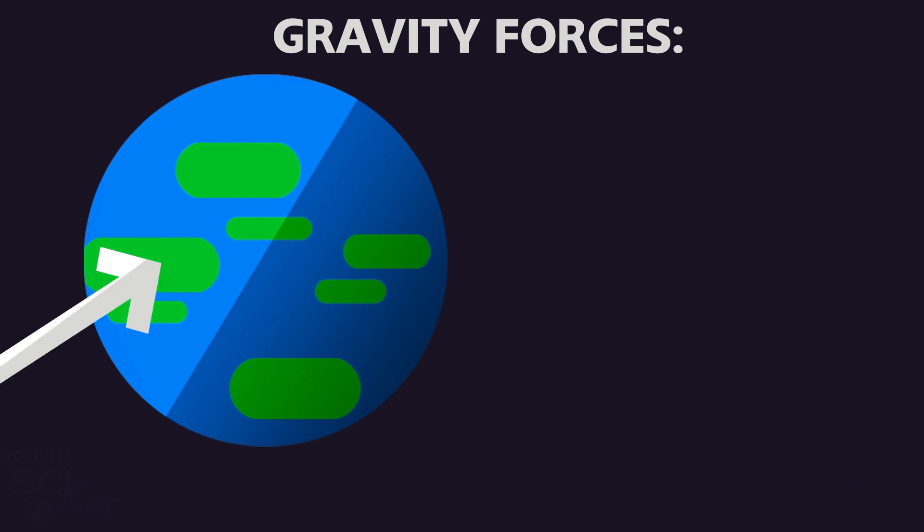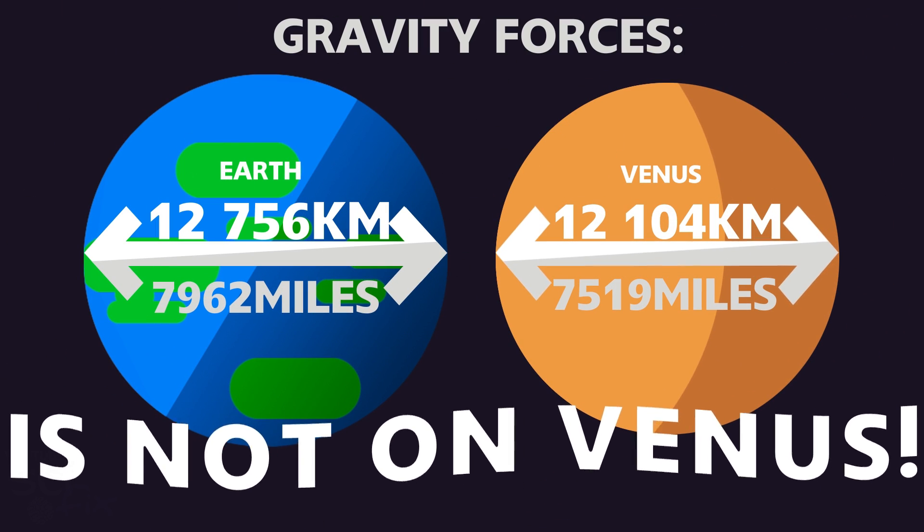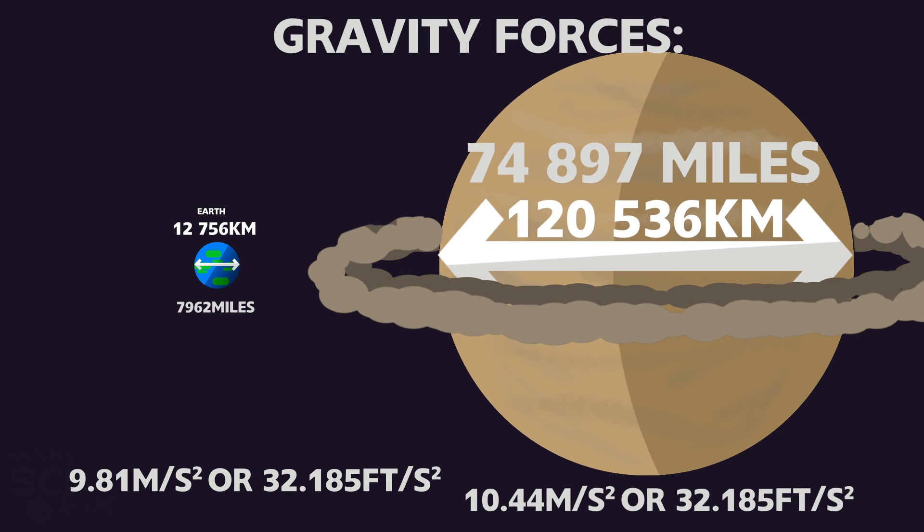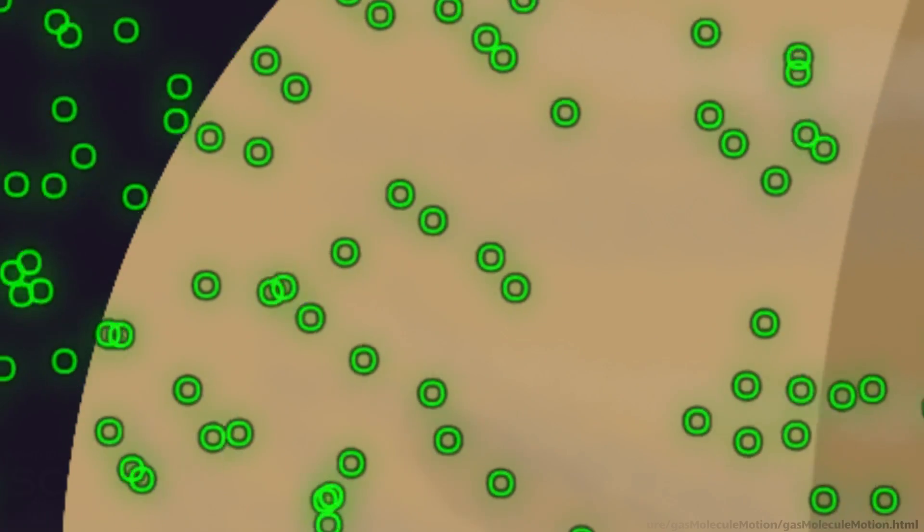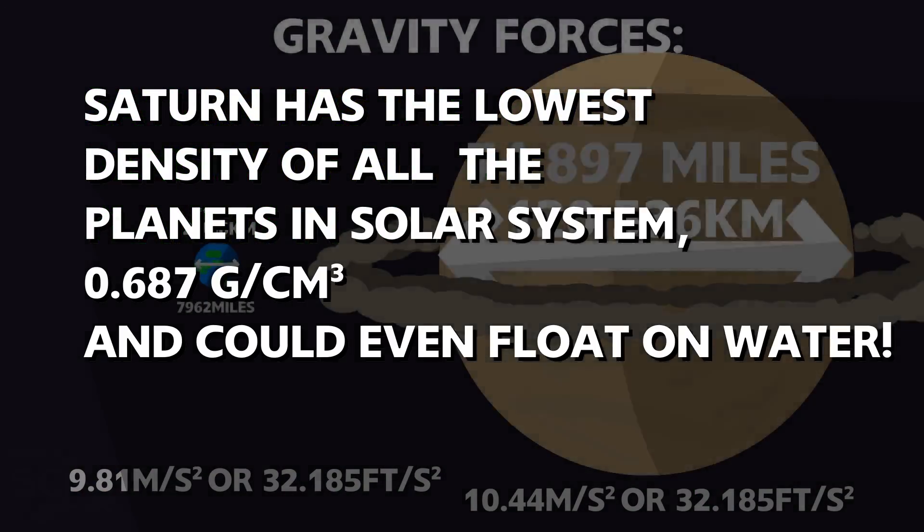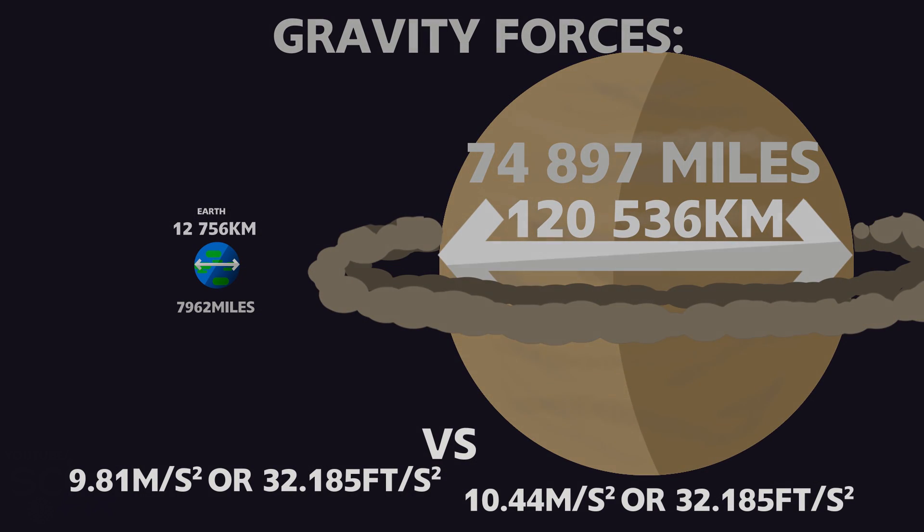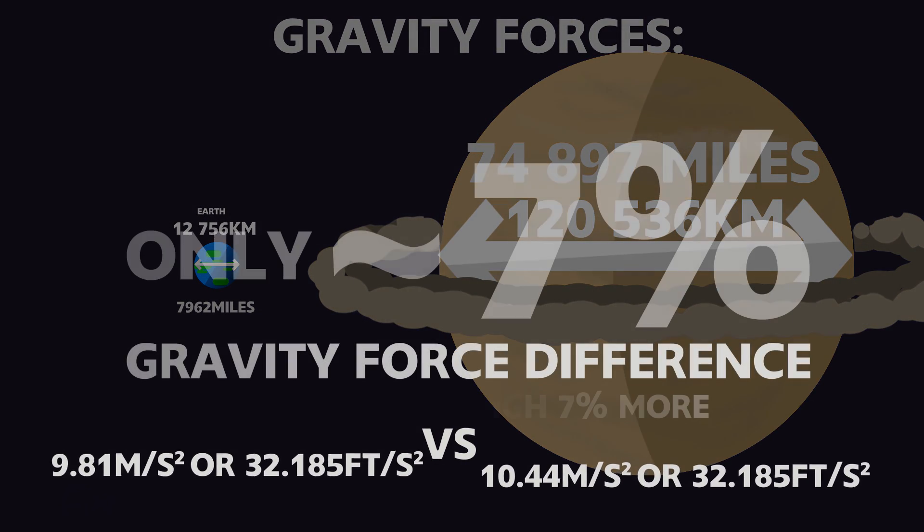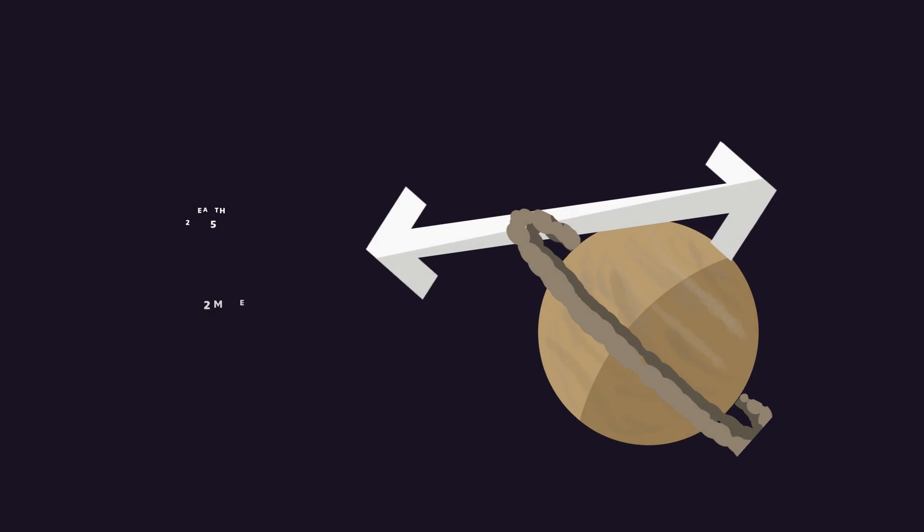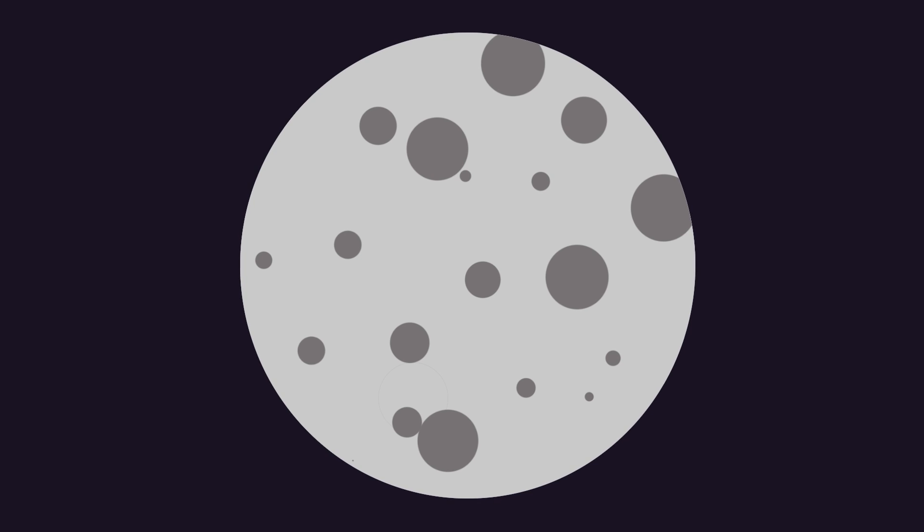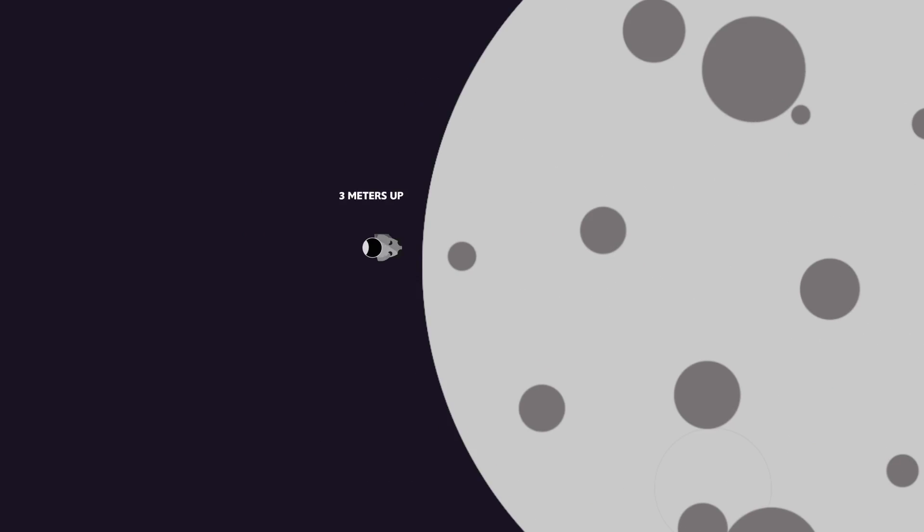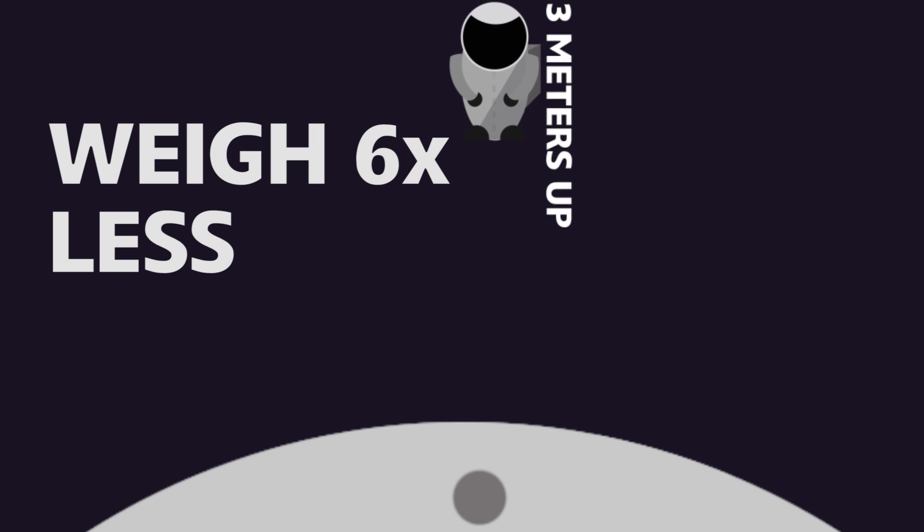Surprisingly, the closest gravitational force to Earth's isn't on Venus, which is similar size to Earth, but it is on Saturn, which is way bigger. This is because Saturn is made up of gases and it's not solid like Earth. Its gravitational force is 10.44 meters per second squared, which makes it only 7% stronger than Earth's surface gravity on the equator. And on the Moon, the gravitational force is 1.6 the strength, which makes you be able to jump 3 meters up as you weigh 6 times less.